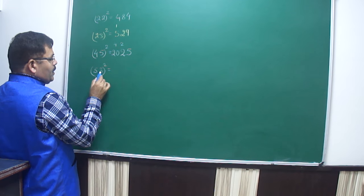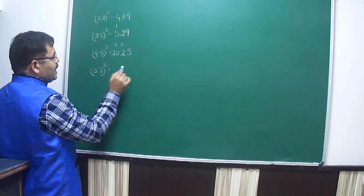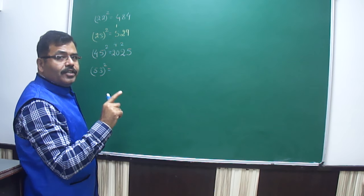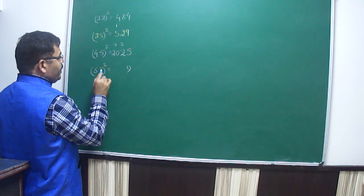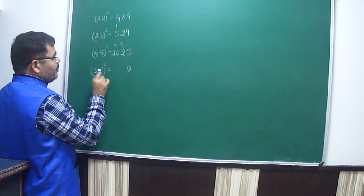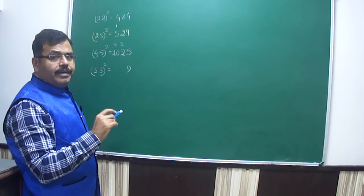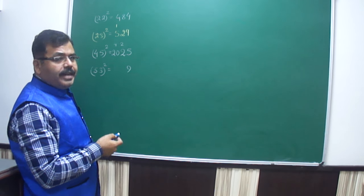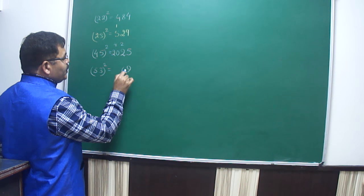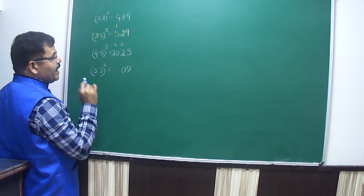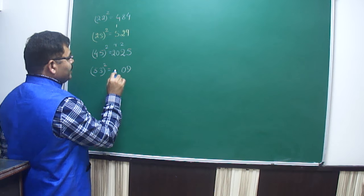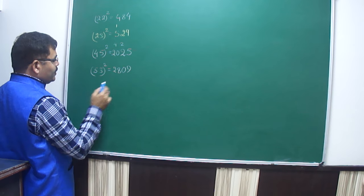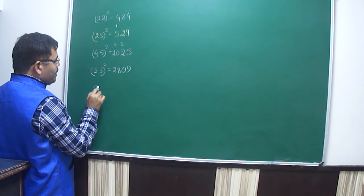Similarly, suppose we have to find 53 squared. Square the unit digit — 3 squared is 9. Now multiply 5 into 3, which is 15, make double of it — double of 15 is 30. Write 0, carry 3. Then 5 squared is 25, and the 3 carried over makes it 28. So 2809 is the square of 53.